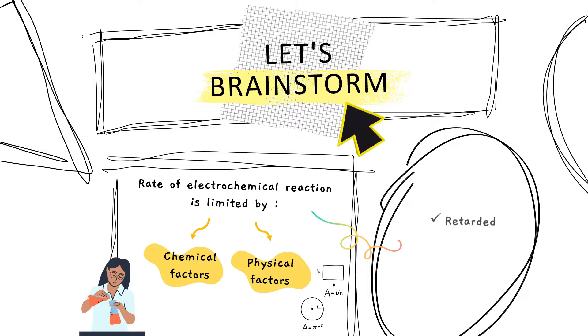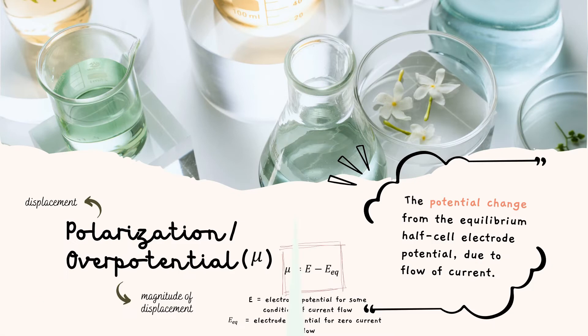Thus, the reaction is said to be retarded or polarized by these environmental factors. Polarization or overpotential can be described as the potential change from the equilibrium half-cell electrode potential, which is due to the current flow.